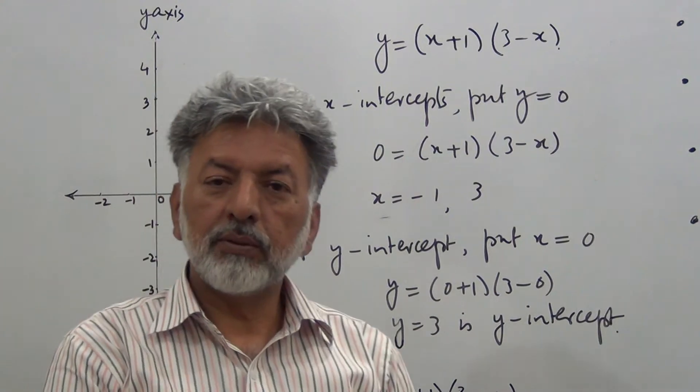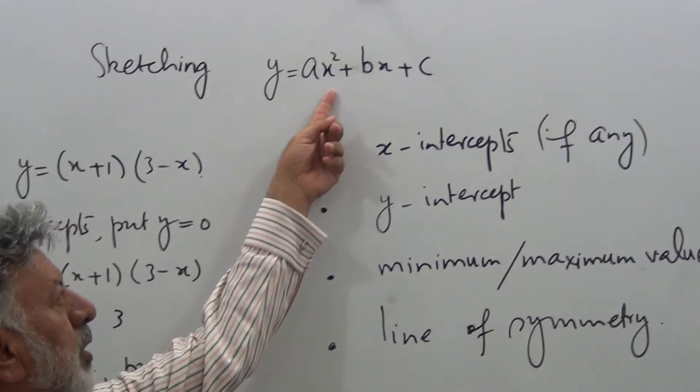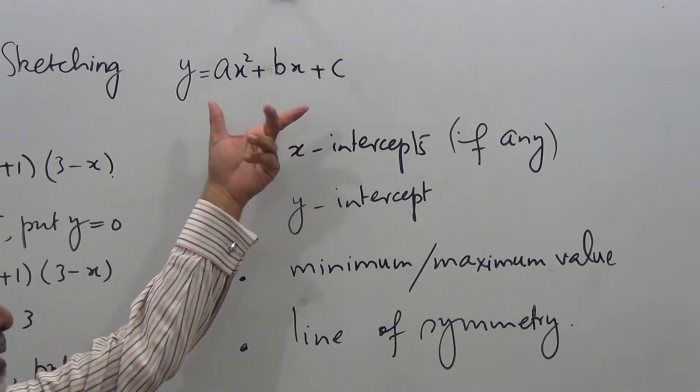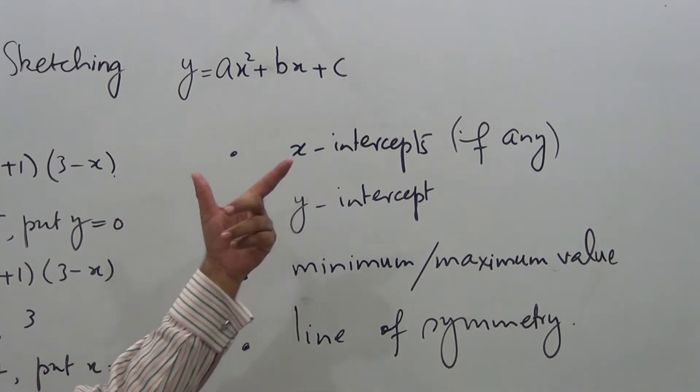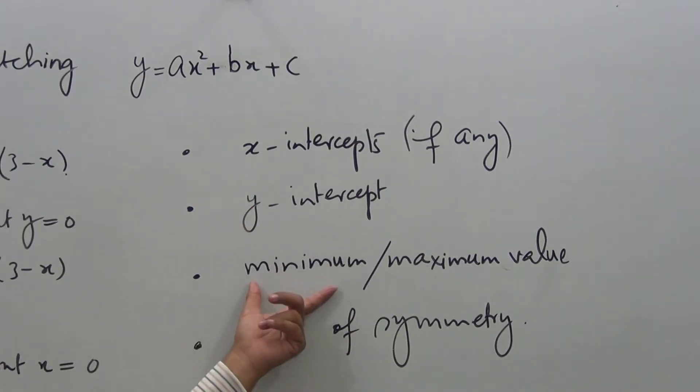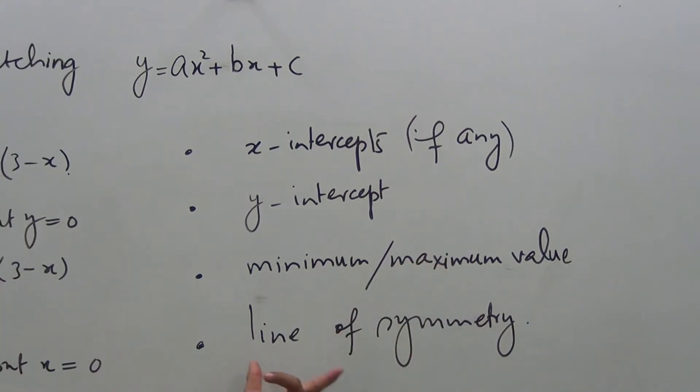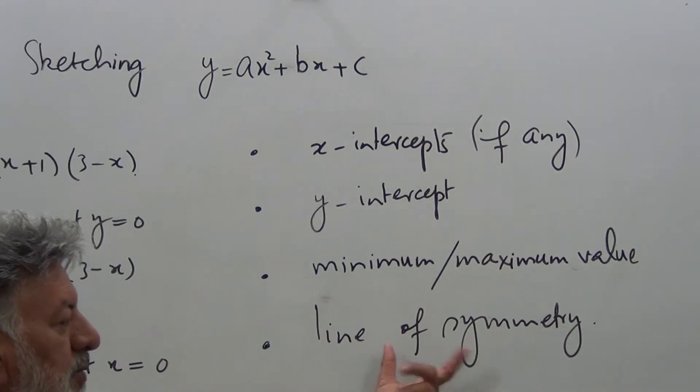We are sketching the quadratic function y = ax² + bx + c. We need x-intercepts if any, y-intercept, minimum or maximum value whichever is the case, and the line of symmetry.